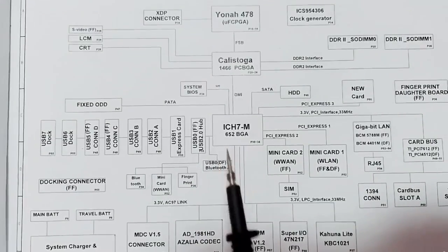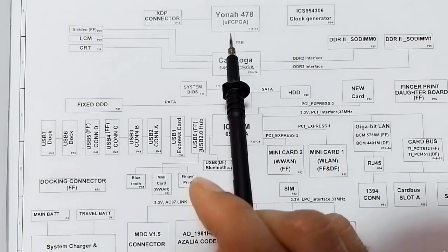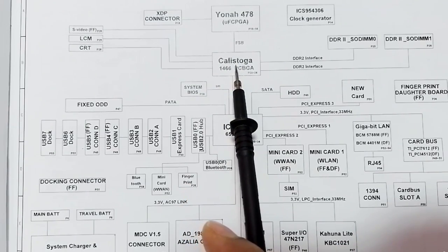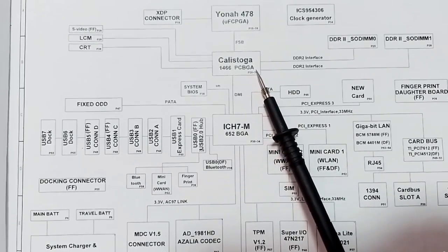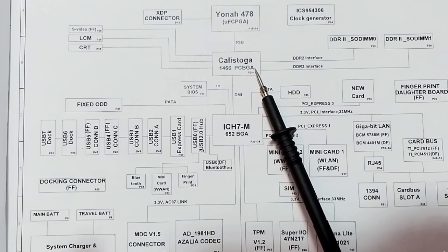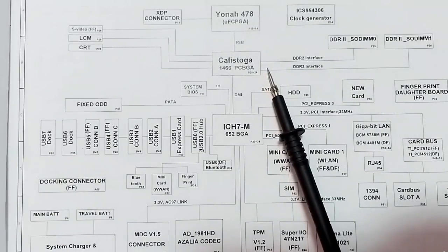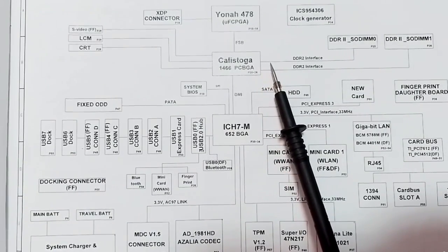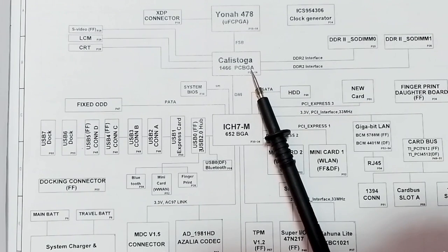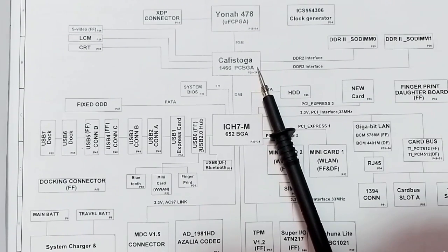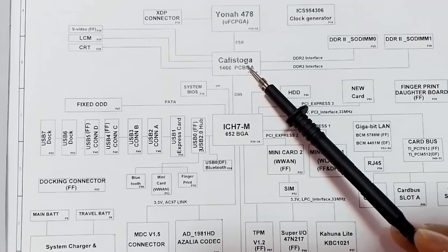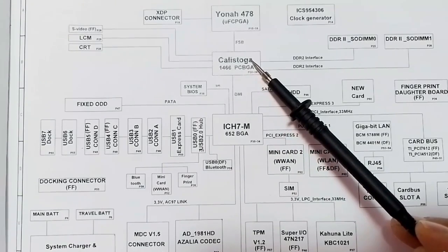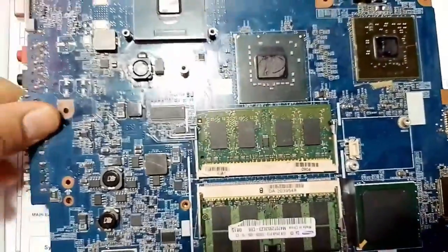In the block diagram, we have the CPU, the North Bridge or GMCH, and the ICH. Sometimes the GMCH is separated — you'll find the graphics card and North Bridge separate. But here the graphics card is integrated with the North Bridge, which is why we call it GMCH: Graphic Memory Control Hub. Sometimes the ICH is also integrated with the GMCH, and then we call it the BCH.